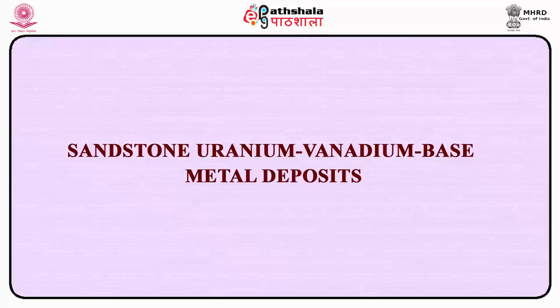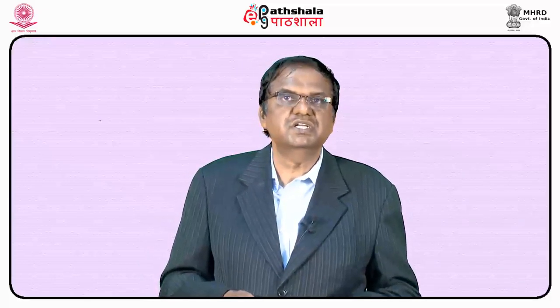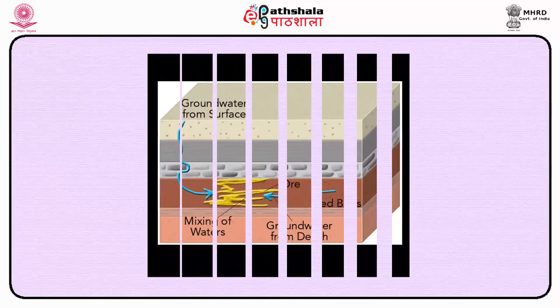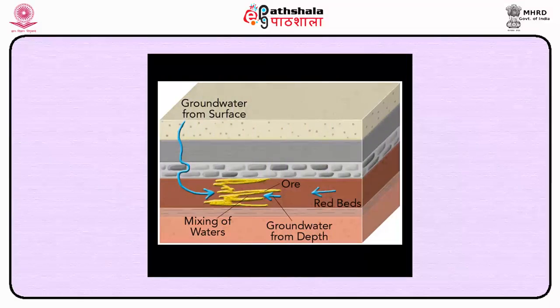The second important type of strata-bound deposit is the sandstone-uranium-vanadium base metal deposits. These deposits are found in terrestrial sediments, frequently fluviatile, which were generally laid down under arid conditions. As a result, the host rocks are often red in colour and for this reason, copper deposits of this type are commonly referred to as red bed coppers.